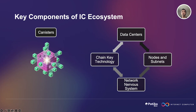Next, we have Chain Key Technology. The correct operation of subnets and inter-subnet communication relies on a suite of novel cryptographic protocols, collectively referred to as Chain Key Cryptography. Chain Key Cryptography makes it possible for subnets to authenticate responses to user requests, the subnet state, and inter-subnet messages in a completely decentralized way.